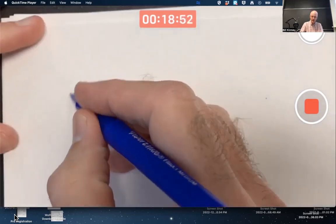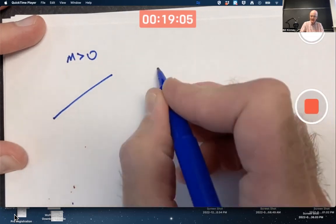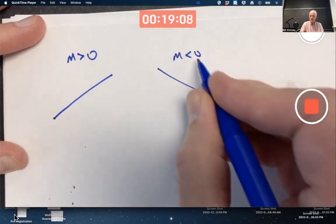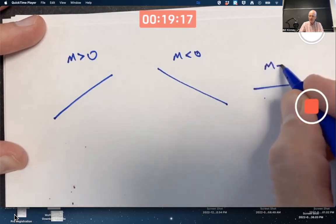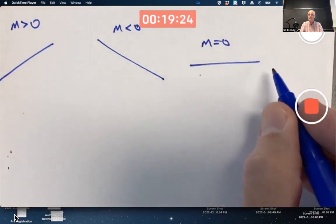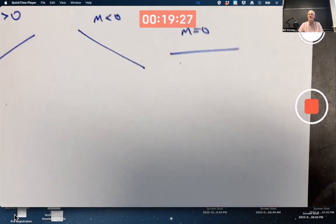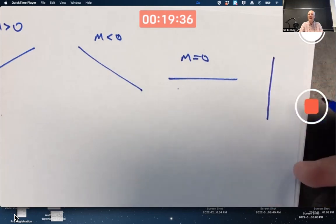It is good to know about generalities too. Positive slope means the graph rises as you move from left to right. Negative slope means the graph goes down, falls as you move from left to right. Zero slope means the graph is horizontal. What about a vertical line? Undefined slope.